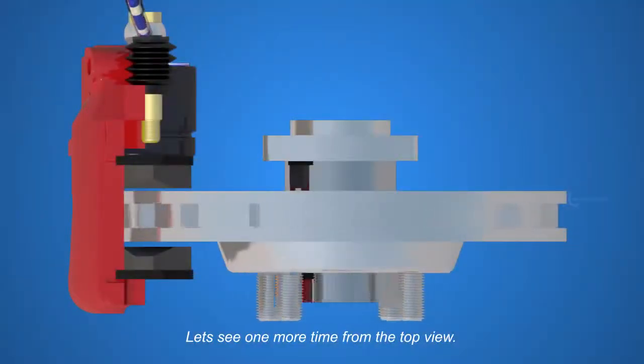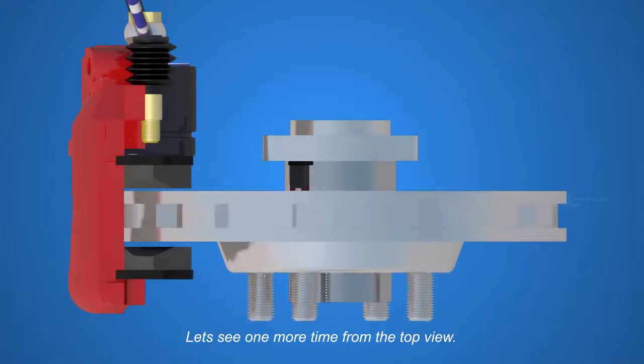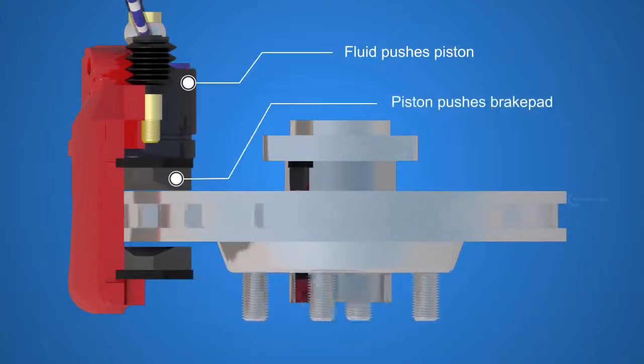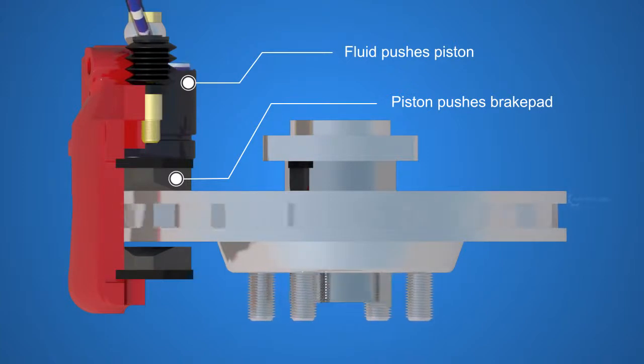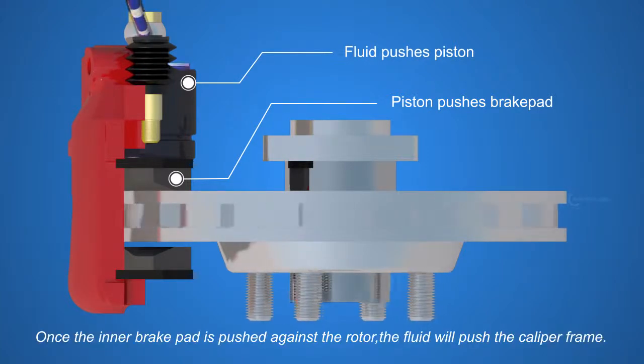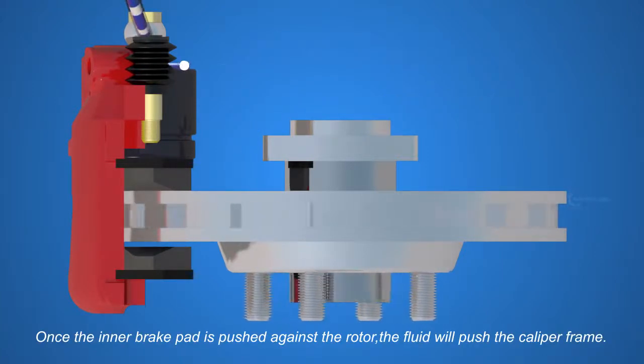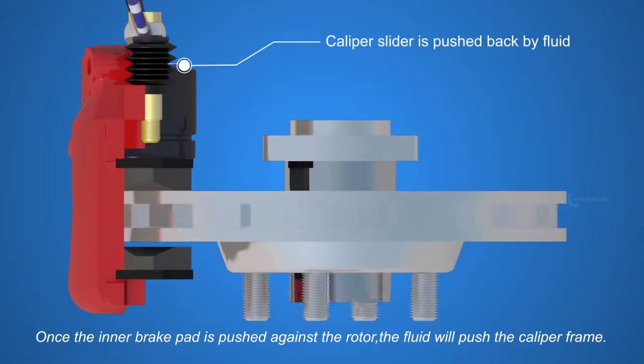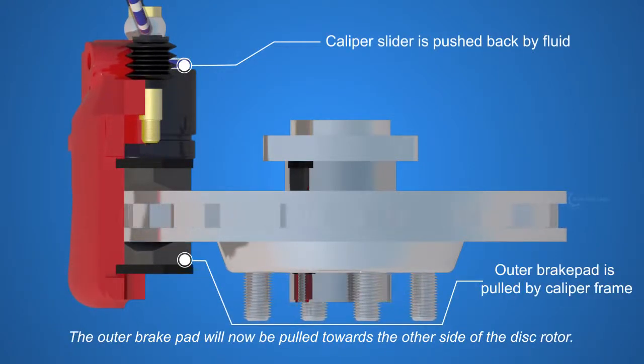Let's see one more time from the top view. The fluid pushes the piston, and the piston pushes the inner brake pad. Once the inner brake pad is pushed against the rotor, the fluid will push the caliper frame. The outer brake pad will now be pulled towards the other side of the disc rotor.